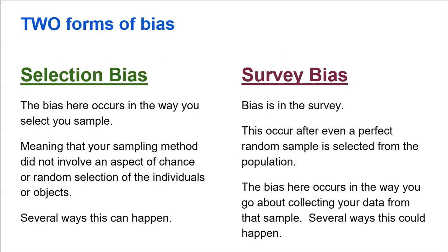There are two forms of bias: selection bias and survey bias. I call it before and after. Selection bias — the bias here occurs in the way you select your sample. This actually occurs before you have your sample. You've already done something wrong, meaning your sampling method did not involve an aspect of chance or random selection. The problem is occurring before you even select your sample and how you select your sample is not good.